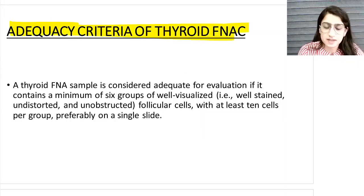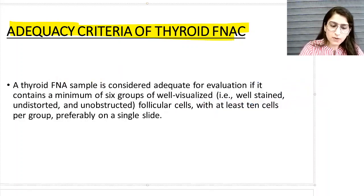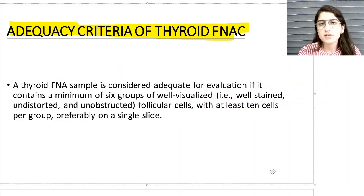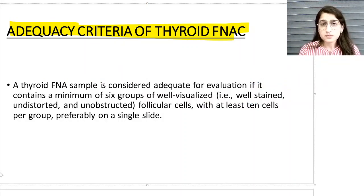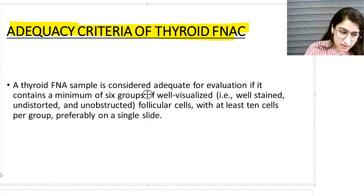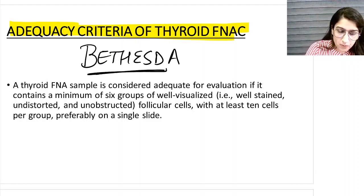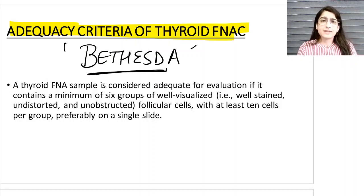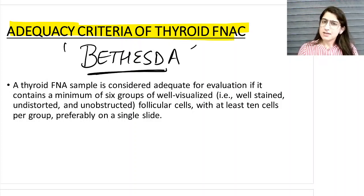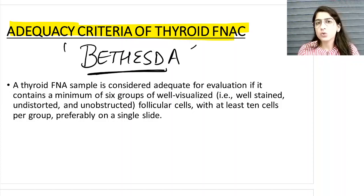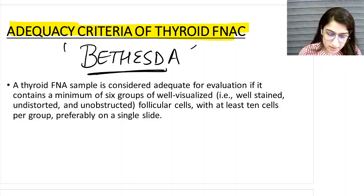We pathologists follow a certain reporting system of thyroid cytopathology, and this particular system is called the Bethesda system - the Bethesda System of Reporting Thyroid Cytopathology. This Bethesda system is also used for reporting Pap smears as well. This system has a particular definition for when you call a thyroid FNAC sample adequate.